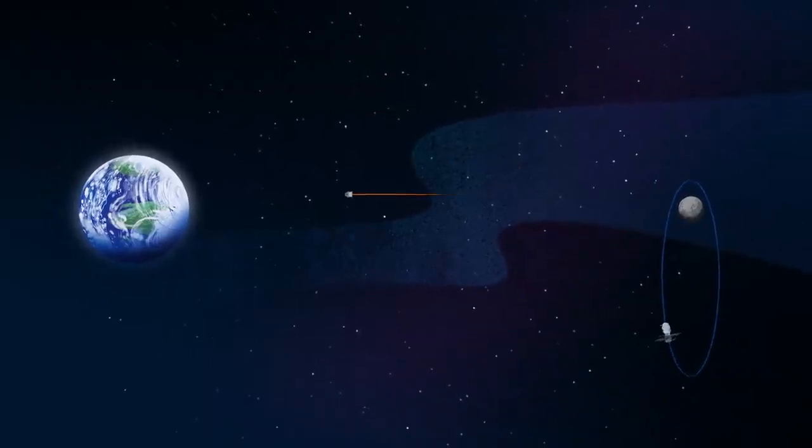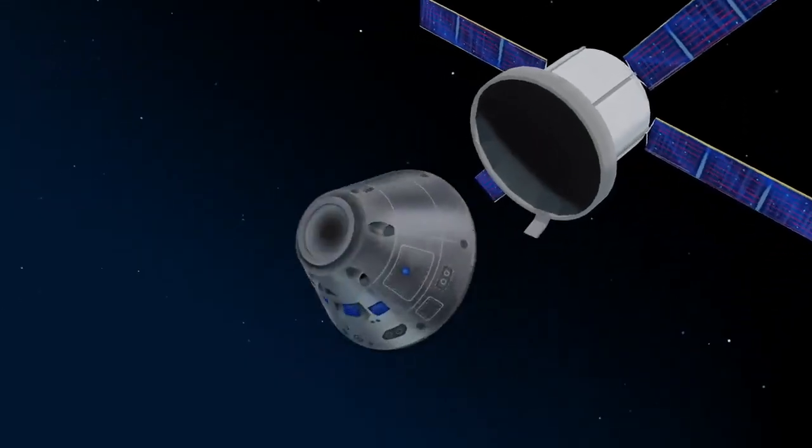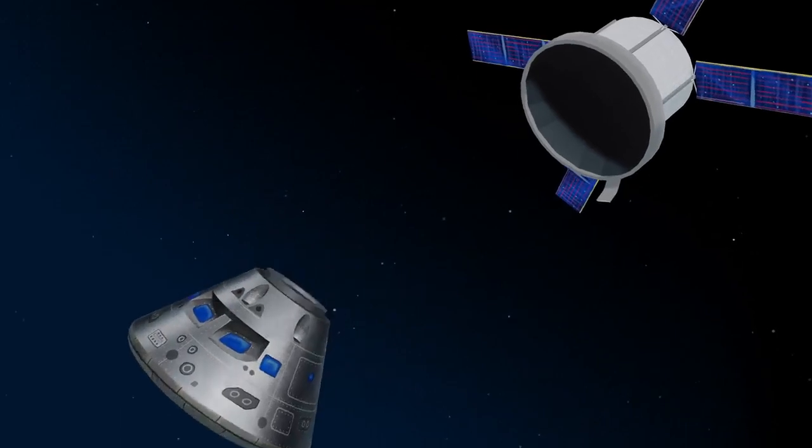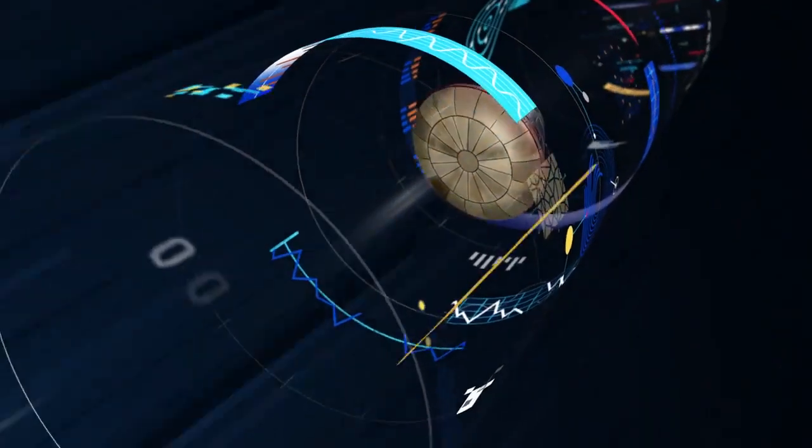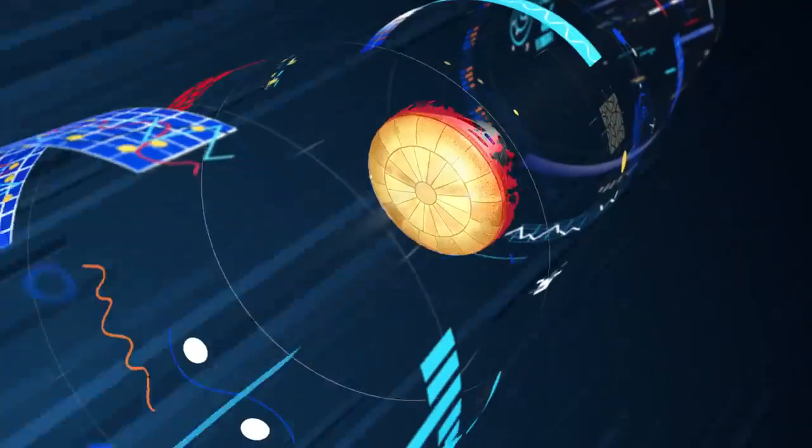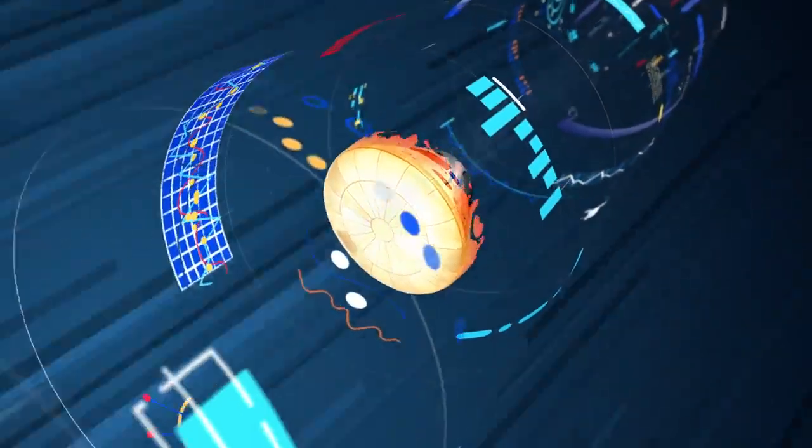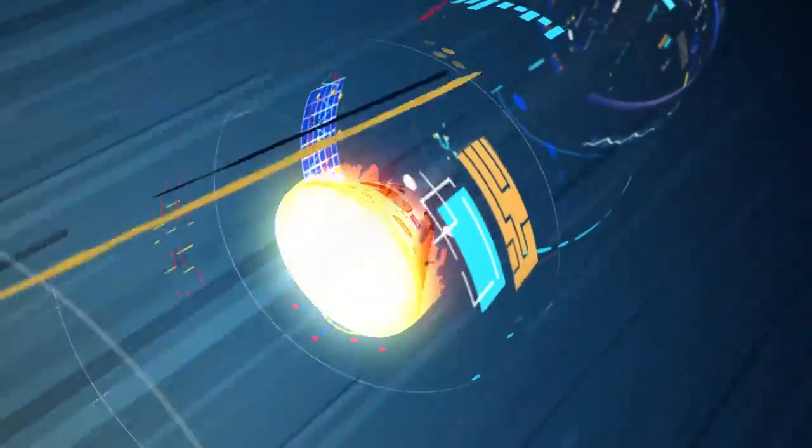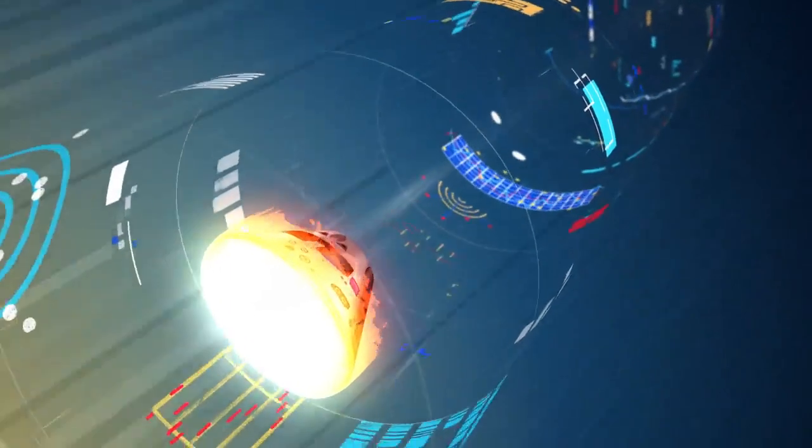As they near the end of this journey, the service module is released, and the crew module is oriented heat shield first. Entering Earth's atmosphere at 25,000 miles per hour, the friction of air slows Orion considerably, while also subjecting it to temperatures of 5,000 degrees.